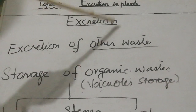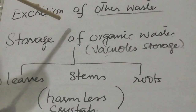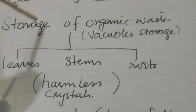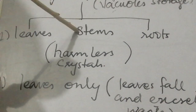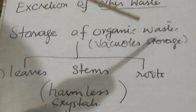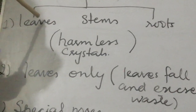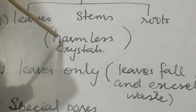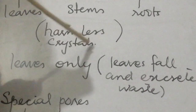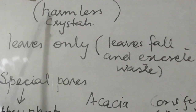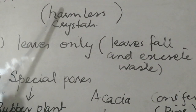Now we will discuss the excretion of other waste in plants. Plants use different methods to excrete waste. Some plants store waste in their bodies, mainly in the leaves, stem, and roots. Some plants store organic waste in their vacuoles. This waste is harmless and is present in the form of crystals in the leaves, stem, and roots.